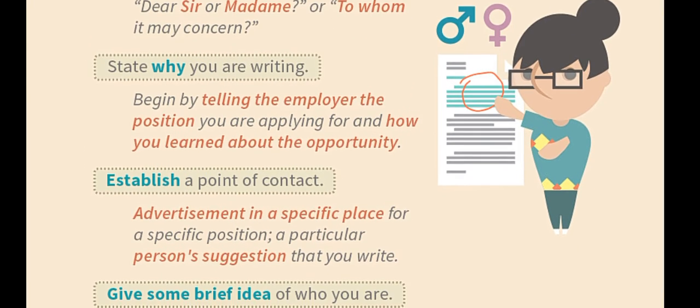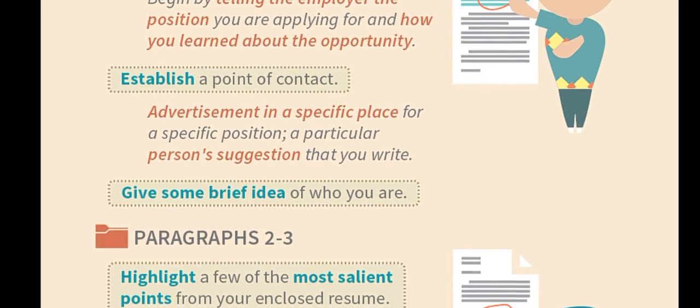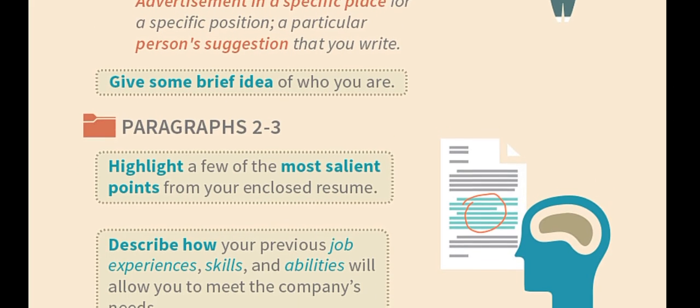Start by stating why you are writing — the purpose of your writing. You must have a clear understanding of your purpose. Begin by telling the employer the position you are applying for and how you learned about the opportunity. Next, establish a point of contact — for example, an advertisement in a specific place for a specific position — and mention any suggestion that led you to write.